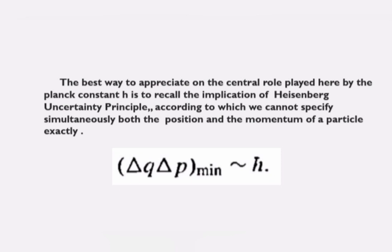What is the Heisenberg Uncertainty Principle? The Heisenberg Uncertainty Principle states that we cannot simultaneously specify both the position and the momentum of a particle exactly. That is, there is an inherent uncertainty always present in the simultaneous measurement of canonically conjugate coordinates.